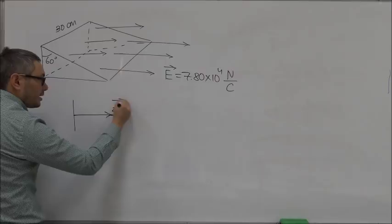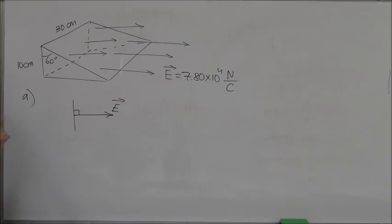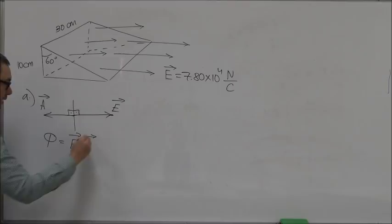The area vector of this side of the prism is pointing outside the volume, so the area vector is pointing this way and is also perpendicular. So the two vectors are pointing opposite to each other. We know that the electric flux is equal to the dot product of these two vectors, so E dot A.